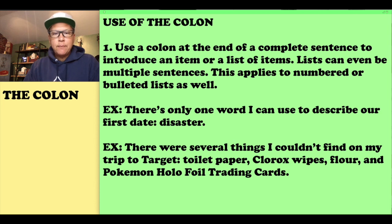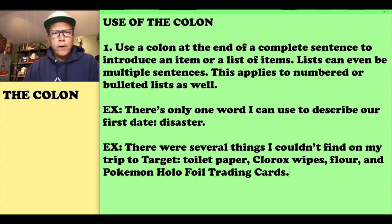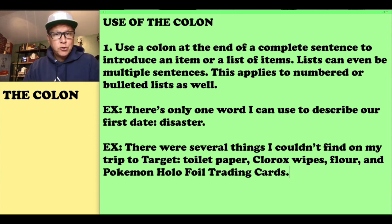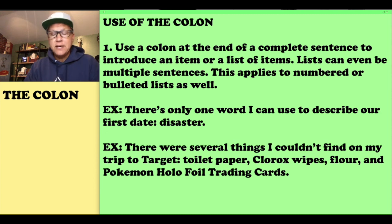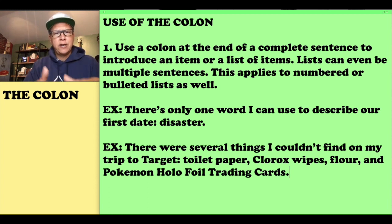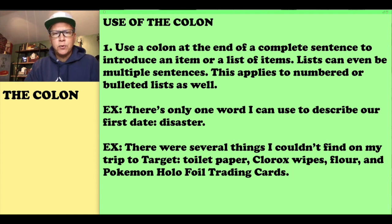Second example with a list: 'There were several things I couldn't find on my trip to Target: toilet paper, Clorox wipes, flour, and Pokémon holographic foil trading cards.' This is probably the example most people are familiar with — a complete sentence followed by a colon and then a list of things, often introduced with phrases like 'the following items.'